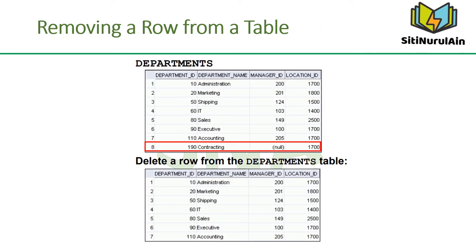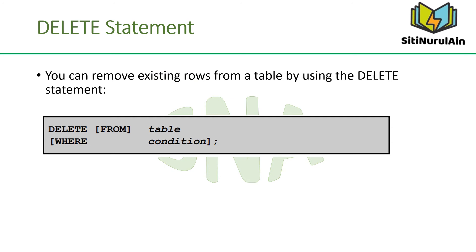The contracting department has been removed from the departments table, as shown by the graphic in the slide. You can remove existing rows from a table by using the DELETE statement. In the syntax, table is the name of the table, and condition identifies the rows to be deleted and is composed of column names, expressions, constants, subqueries, and comparison operators. Note: if no rows are deleted, the message '0 rows deleted' is returned in the Script Output tab in SQL Developer.